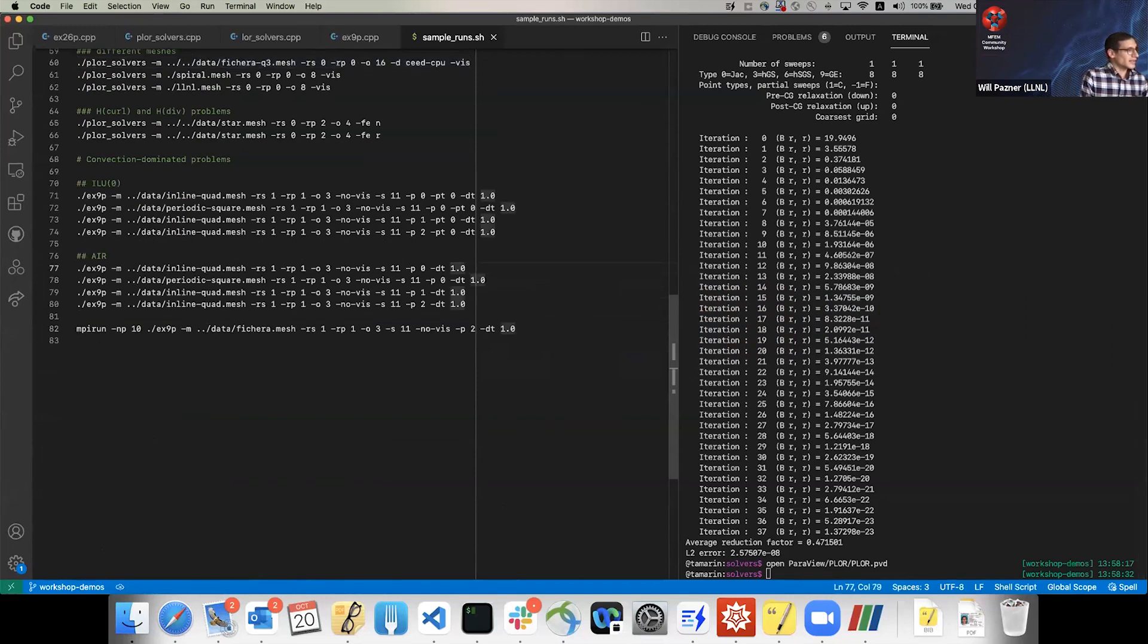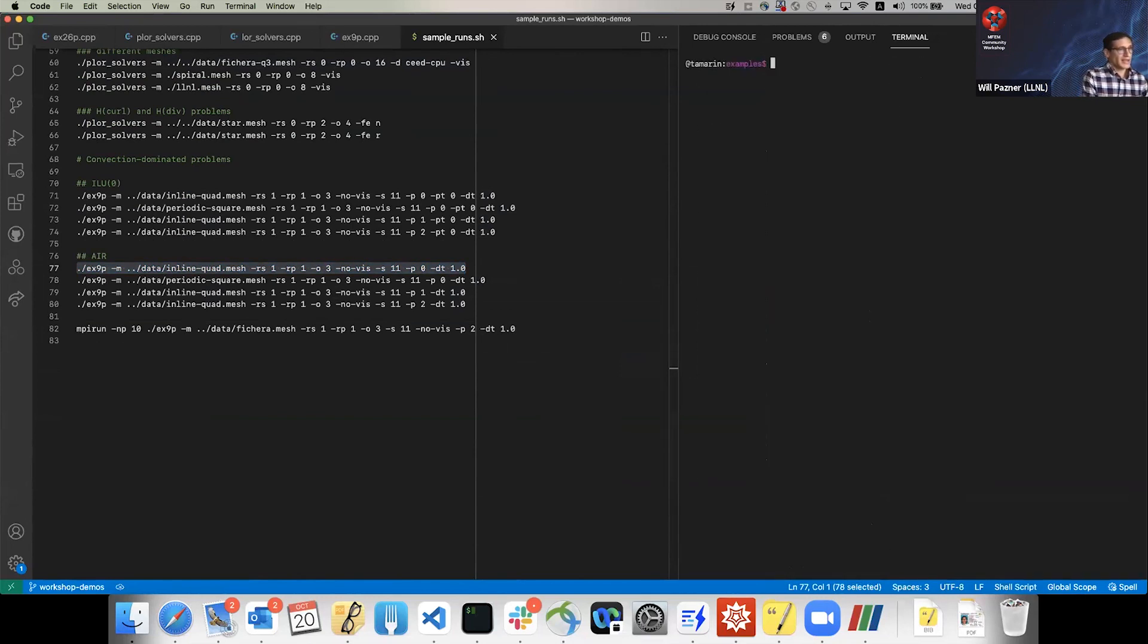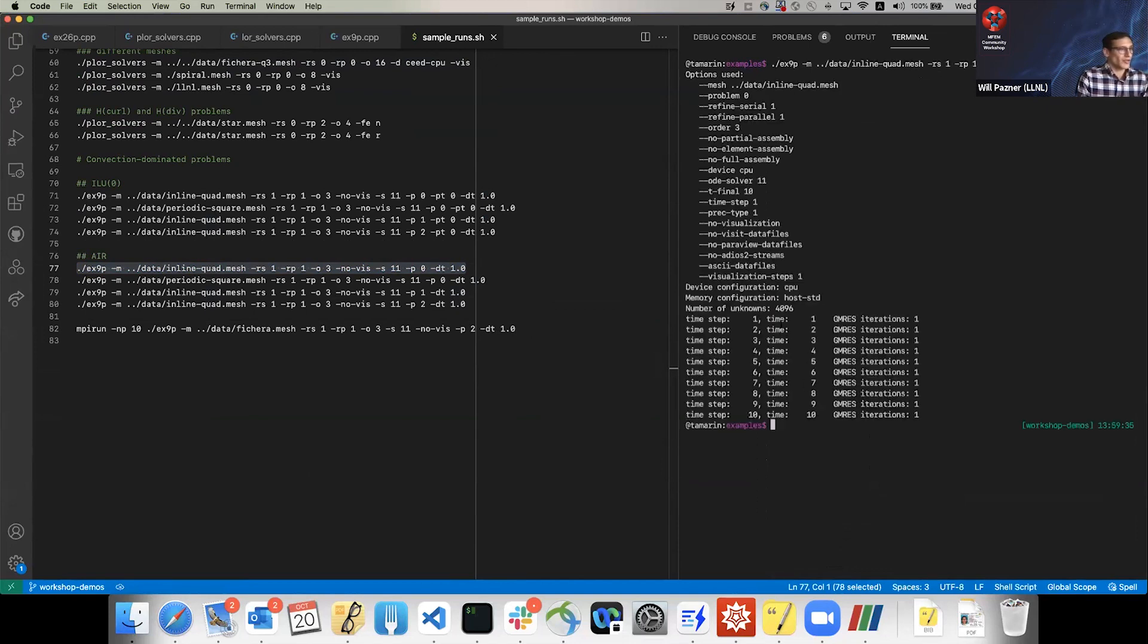I'll show one of these. This is Example 9, DG advection, running with a big time step. Normally, the default time step is like 1e-4 or something. This is time step 1.0. Every time step, it's one iteration because it identifies an ordering corresponding to a sweep, then does a perfect solve.